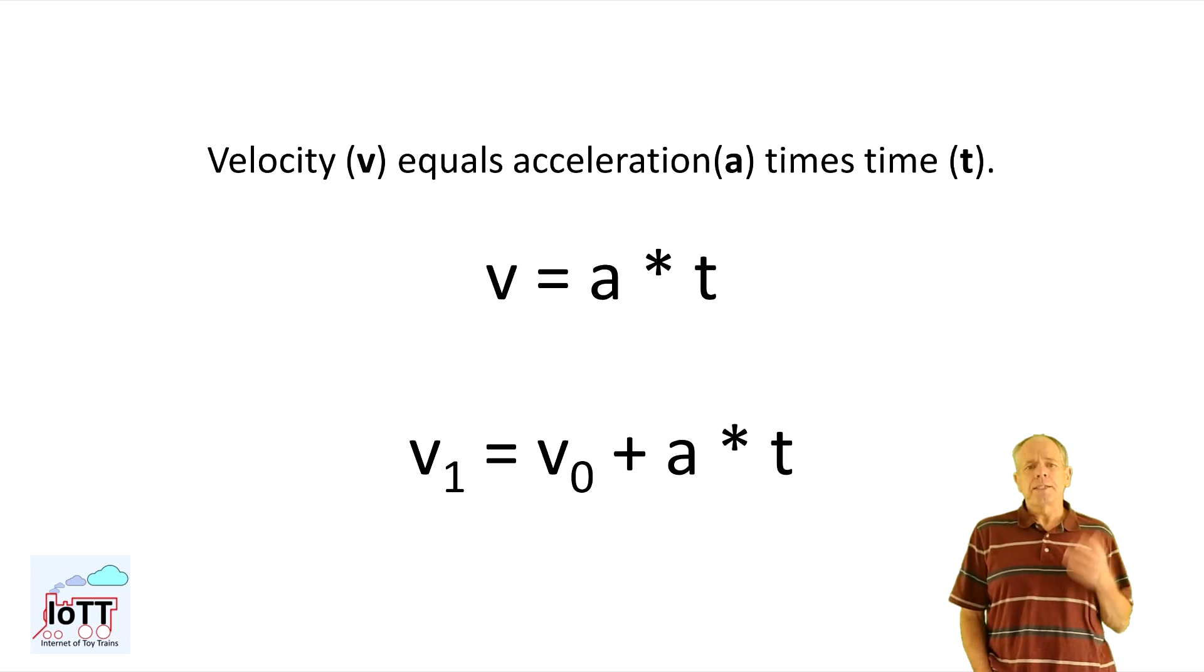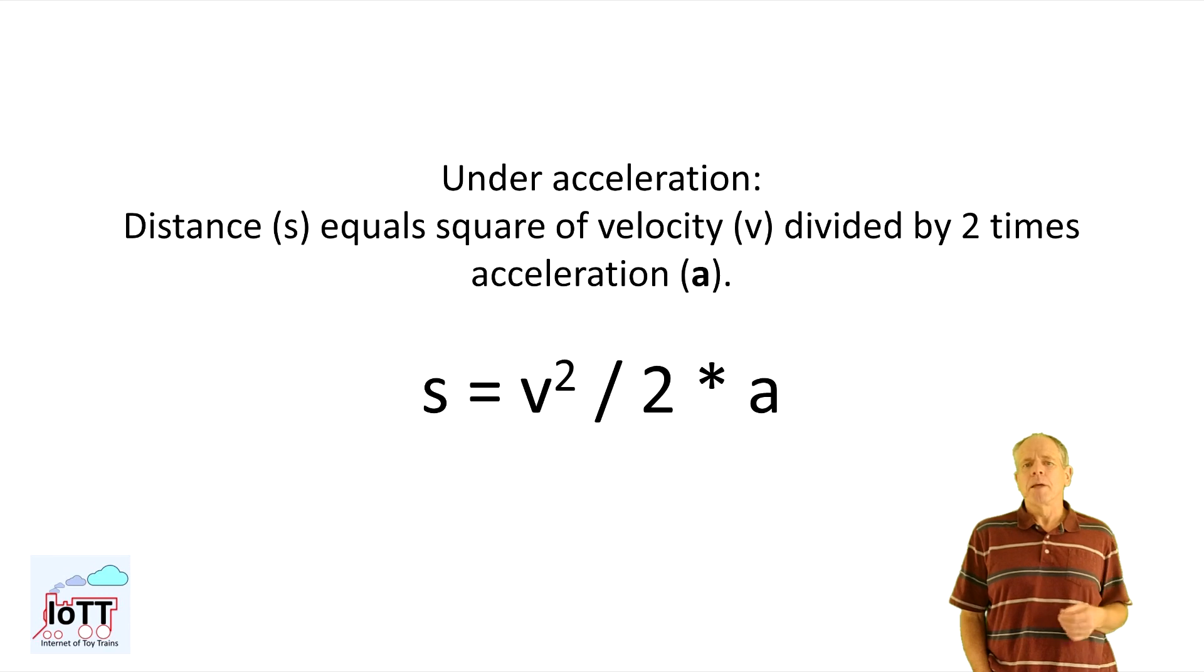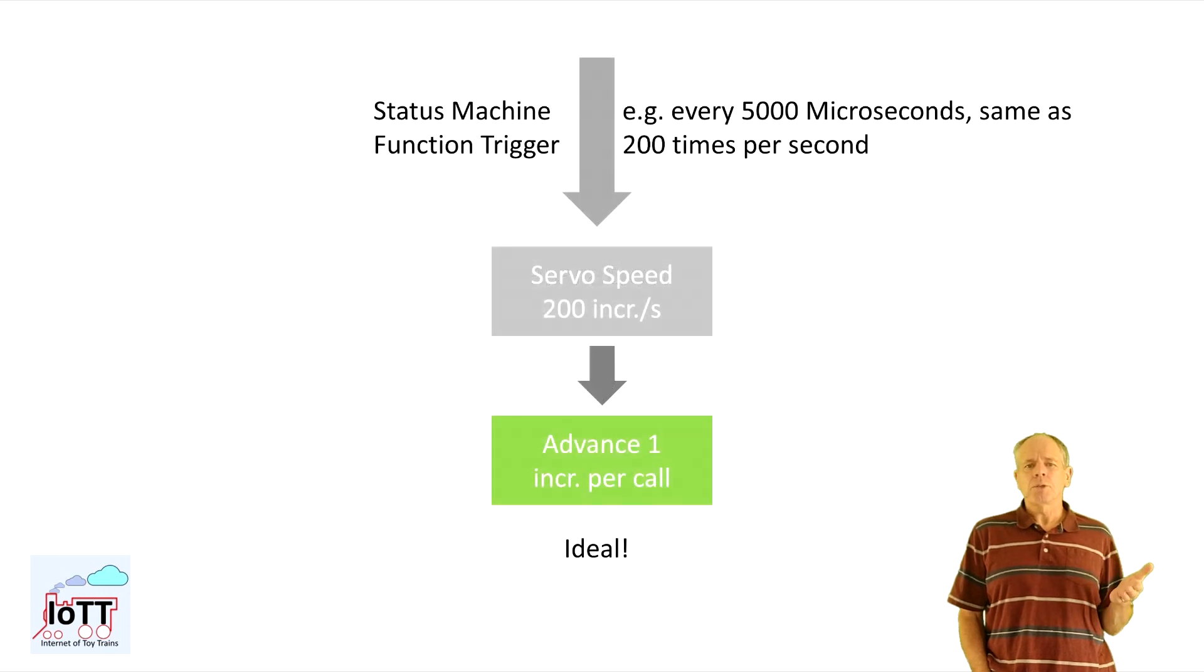The moving direction is determined by the sign of the velocity. That is simple. But to put it in an algorithm, there is more to take care of.